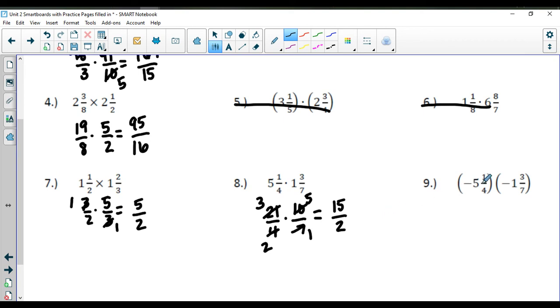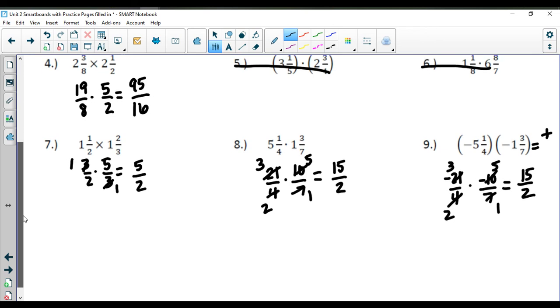Question number 9. I have a negative times a negative. So doing my sign analysis. This is going to give me a positive answer. So I can actually just drop the signs or I can keep them. I'll write them out with the signs there. So we get negative 21 fourths times negative 10 sevenths. Reduce. Reduce. These are going to divide by 7. 3 times 5 is 15. 2 times 1 is 2. So I get 15 halves here.